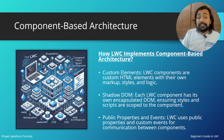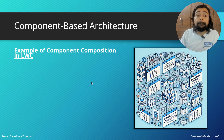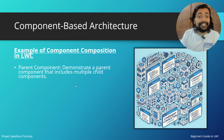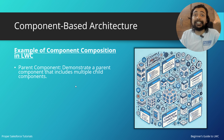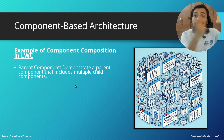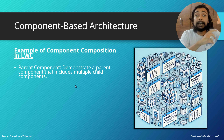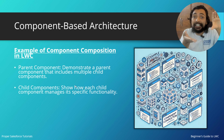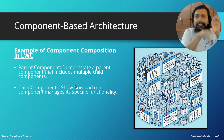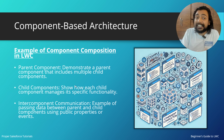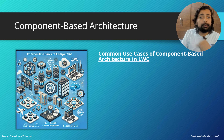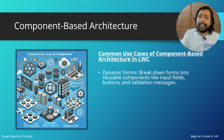LWC uses public properties and custom events so that components can perform communication. For component composition in LWC, a parent component includes multiple child components — an LWC that has other LWCs dependent on it. The child components are shown inside the parent component itself, and they can communicate easily with each other through parent-child component communication.